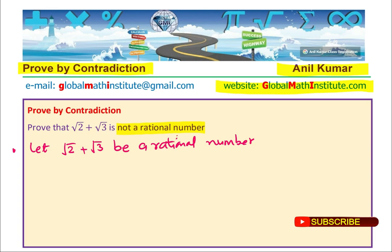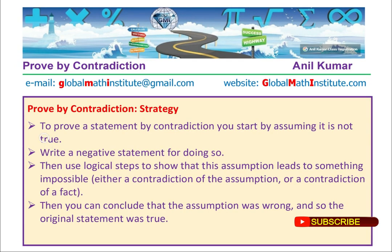So literally, these steps are kind of like this. To prove a statement by contradiction, you start by assuming it is not true. Write a negative statement for doing so. Then use logical steps to show that this assumption leads to something impossible, either a contradiction of the assumption or contradiction of a fact. Then you can conclude that the assumption was wrong and so the original statement was true.